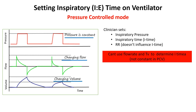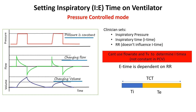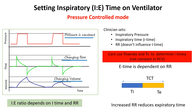The respiratory rate is also set, but it doesn't directly control the inspiratory time, as that is set by the clinician. The expiratory time, however, is completely dependent on respiratory rate. Respiratory rate determines the total cycle time and thus influences the expiratory time. If the total cycle time is short, expiratory time also reduces, since inspiratory time is fixed by the clinician. Thus, the IE ratio in pressure control ventilation is determined by inspiratory time and respiratory rate.